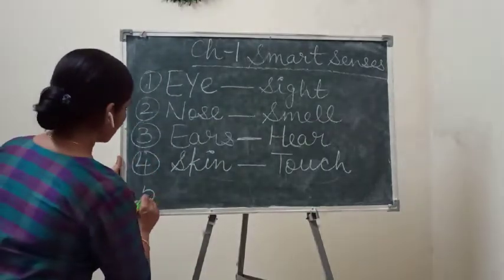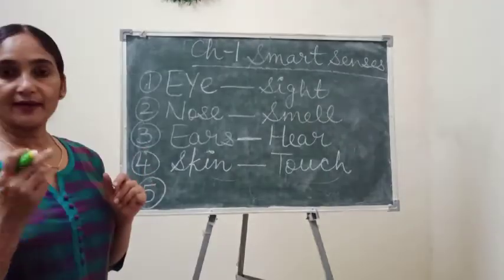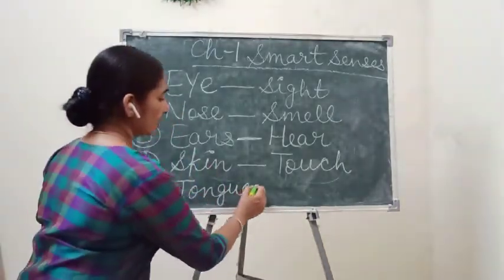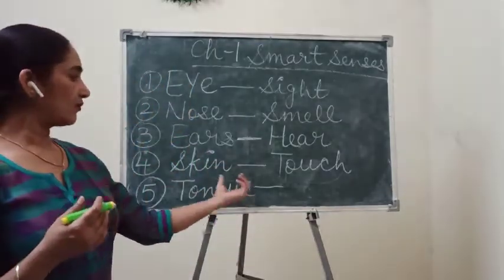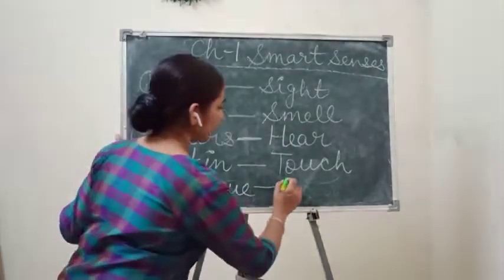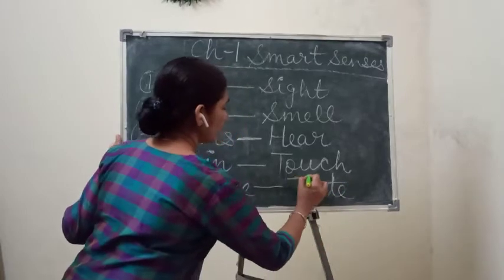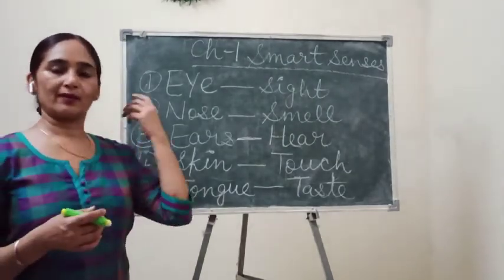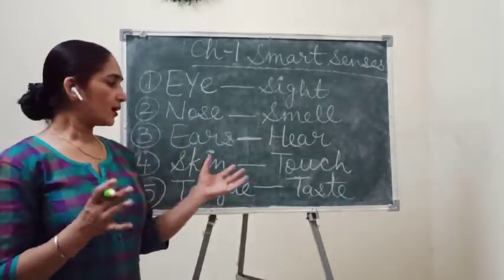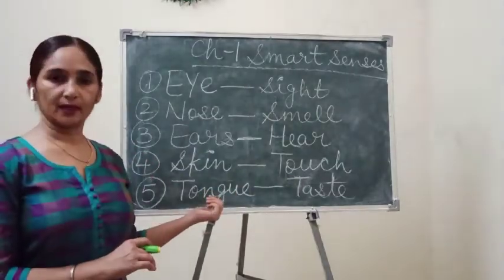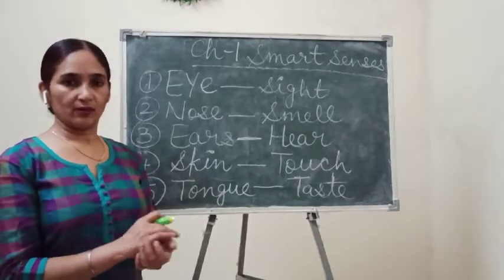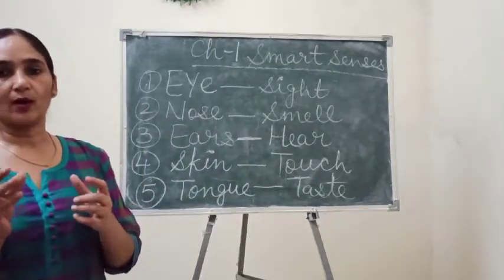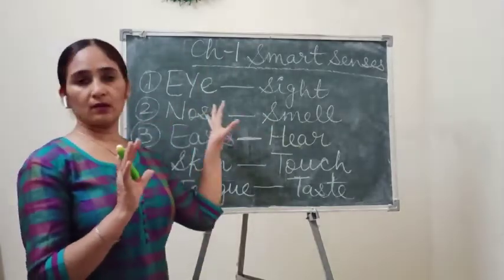The fifth sense organ is tongue. It is a sense organ that identifies taste. When you take sweet, salty, sour, or bitter food, all these kinds of tastes can be easily identified by your tongue. On the tongue, so many taste buds are there. You can identify with the help of your tongue what kind of taste a particular food has. This is all about the five senses.